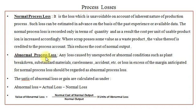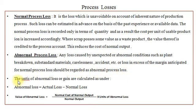Abnormal Process Loss: Any loss caused by unexpected or abnormal conditions such as plant breakdown, substandard materials, carelessness, accident, etc., or loss in excess of the margin anticipated for normal process loss, should be regarded as Abnormal Process Loss. The units of abnormal loss are calculated as: Abnormal Loss = Actual Loss − Normal Loss. The value of abnormal loss is calculated as: (Normal cost of normal output ÷ Normal output) × Units of abnormal loss.